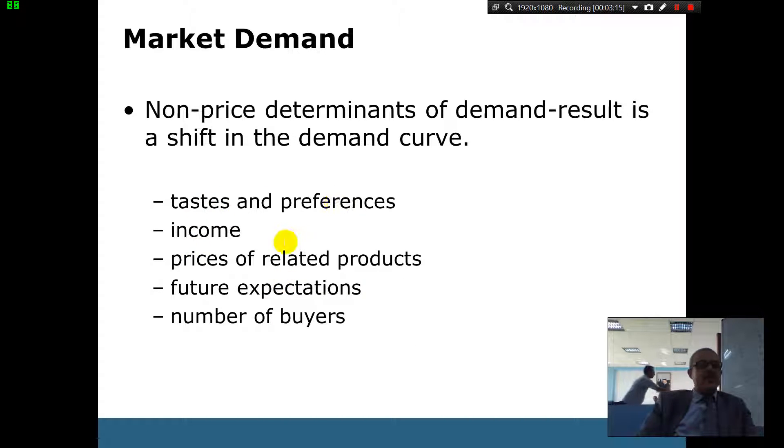And then here are, what are the things? Either tastes and preferences. People think jerjeer is amazing. Income, people have more money then they buy, they will shift to the right. Prices of related goods. If another complementary product becomes very cheap, then maybe now people will demand this complementary. If the other one is a substitute and the other one becomes very cheap, then people stop buying. And then we've got future expectations. In the future, we think it will be very expensive. Maybe we buy now. And the number of buyers. If we've got a lot of people coming from Taiz to Sanaa, we've got more demand because we've got more people in.